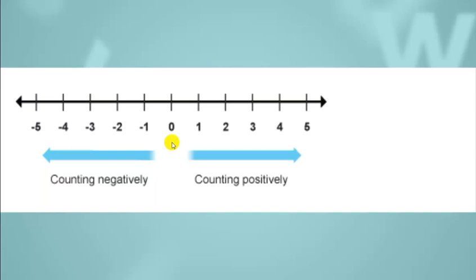And as you move towards the left side of 0, you can see that we are having a negative sign with each and every number, which shows that towards the left side we are having a mirror image of the right side and we are counting negatively. As these numbers are negative, they are having a negative or minus sign with them, which shows their negativity.